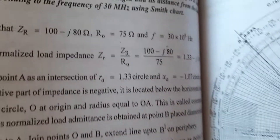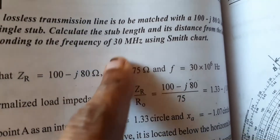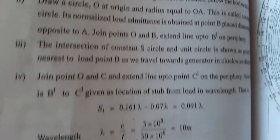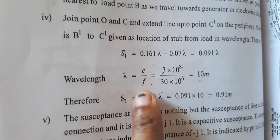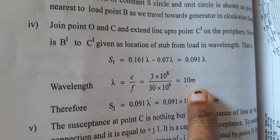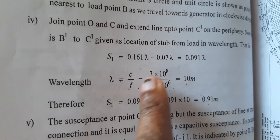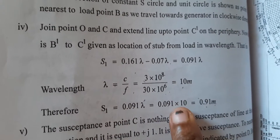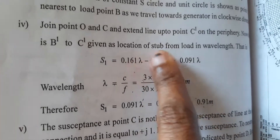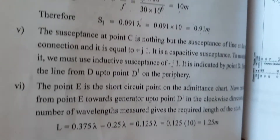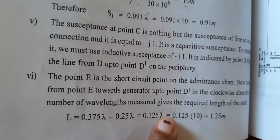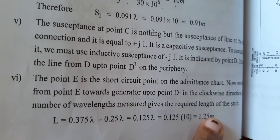From the question, the frequency was given as 30 megahertz, so we can find lambda using the formula lambda equals C divided by F. With C known and F equal to 30 MHz, lambda equals 10 meters. Substituting 10 for lambda, the location of the step is 0.091 times 10, which equals 0.91 meters, and the length of the step is 0.125 times 10, which equals 1.25 meters.